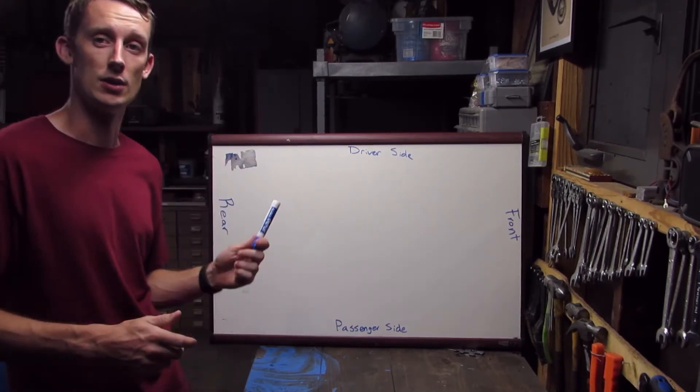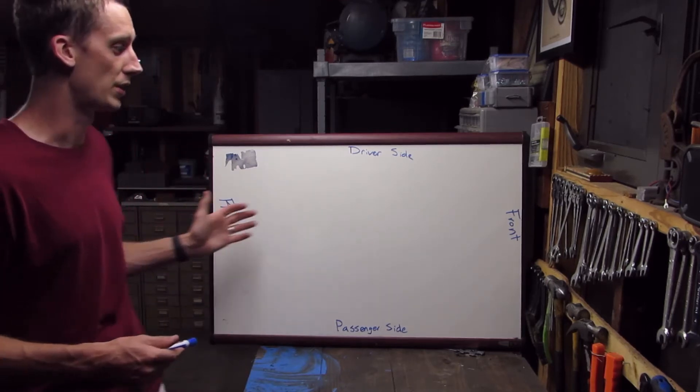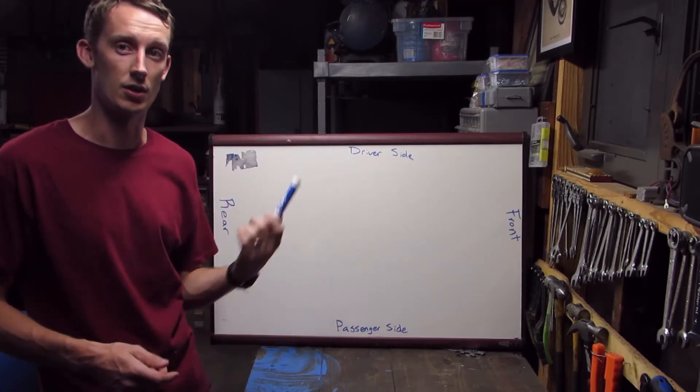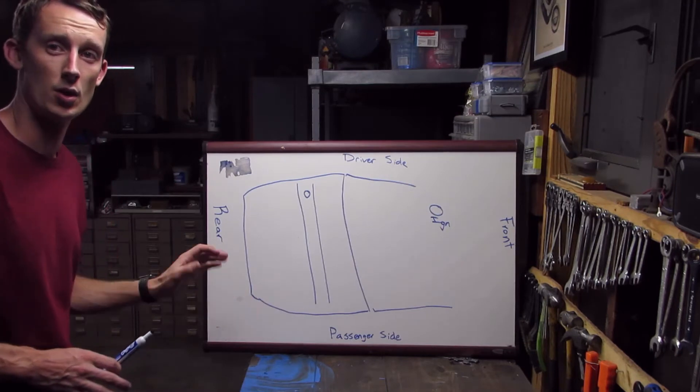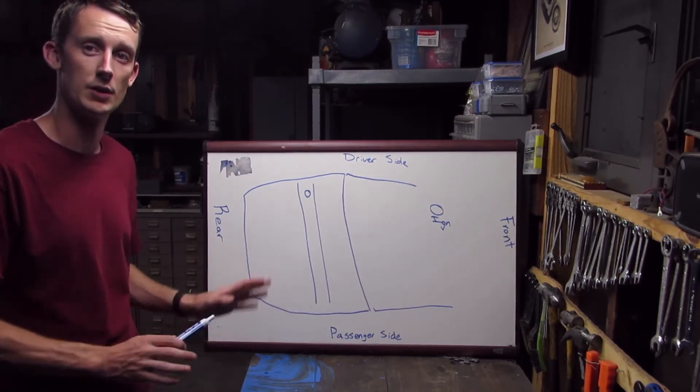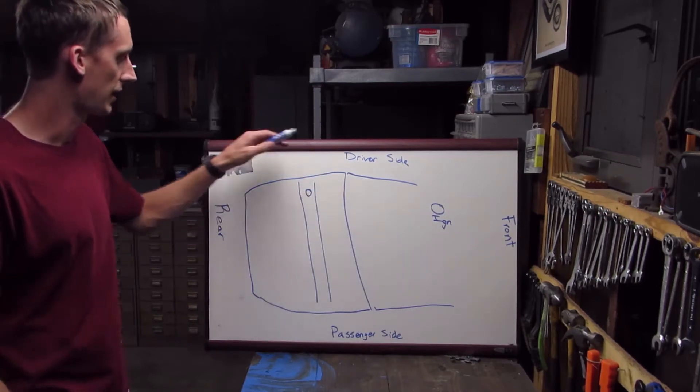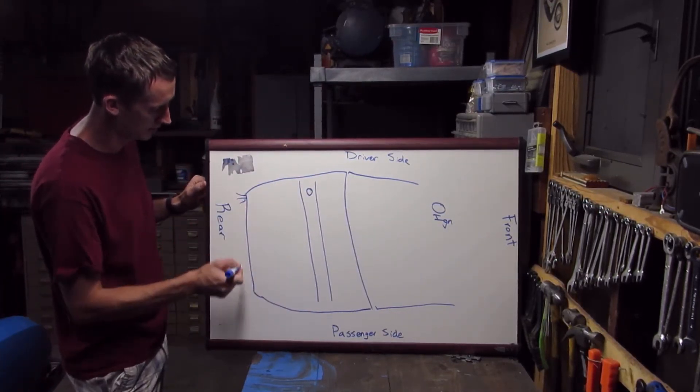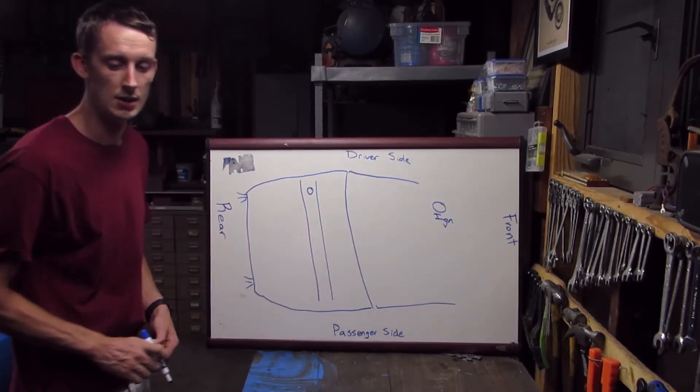So I figured this would be a good time to talk about how I plan to do that. Doing it here on the whiteboard would be easy for you. Just to start out: rear, front, driver's side and passenger side. I'm going to get the outline of the car on here and some of the basic pieces and then we'll get started.